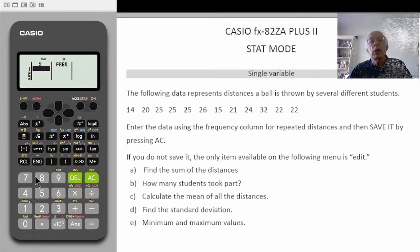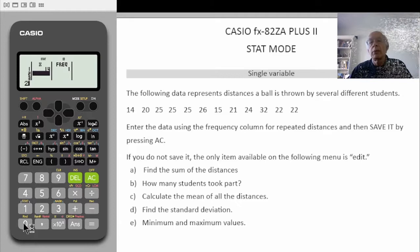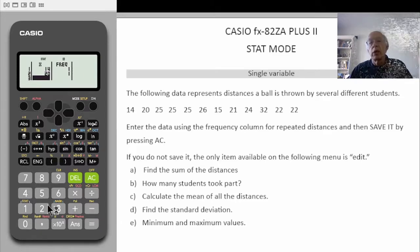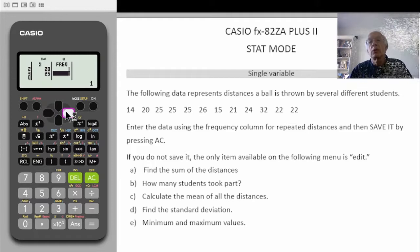Now we can enter the data. 14 equals, 20 equals — you can see they both have frequencies of 1. 25 equals. We know that 25 has a frequency of 3, so we need to move up to the 25 and across into the frequency column and enter 3.